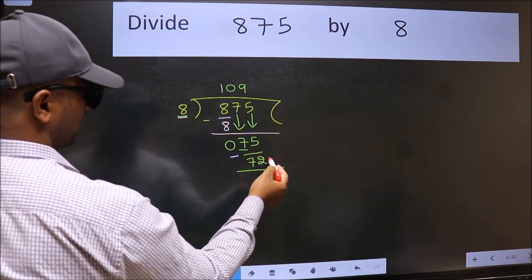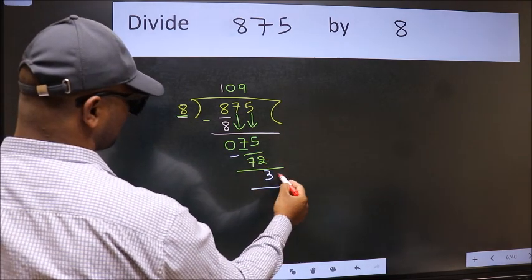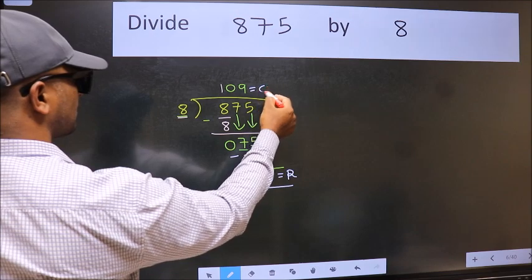No more numbers to bring it down, so we stop here. This is our remainder and this is our quotient.